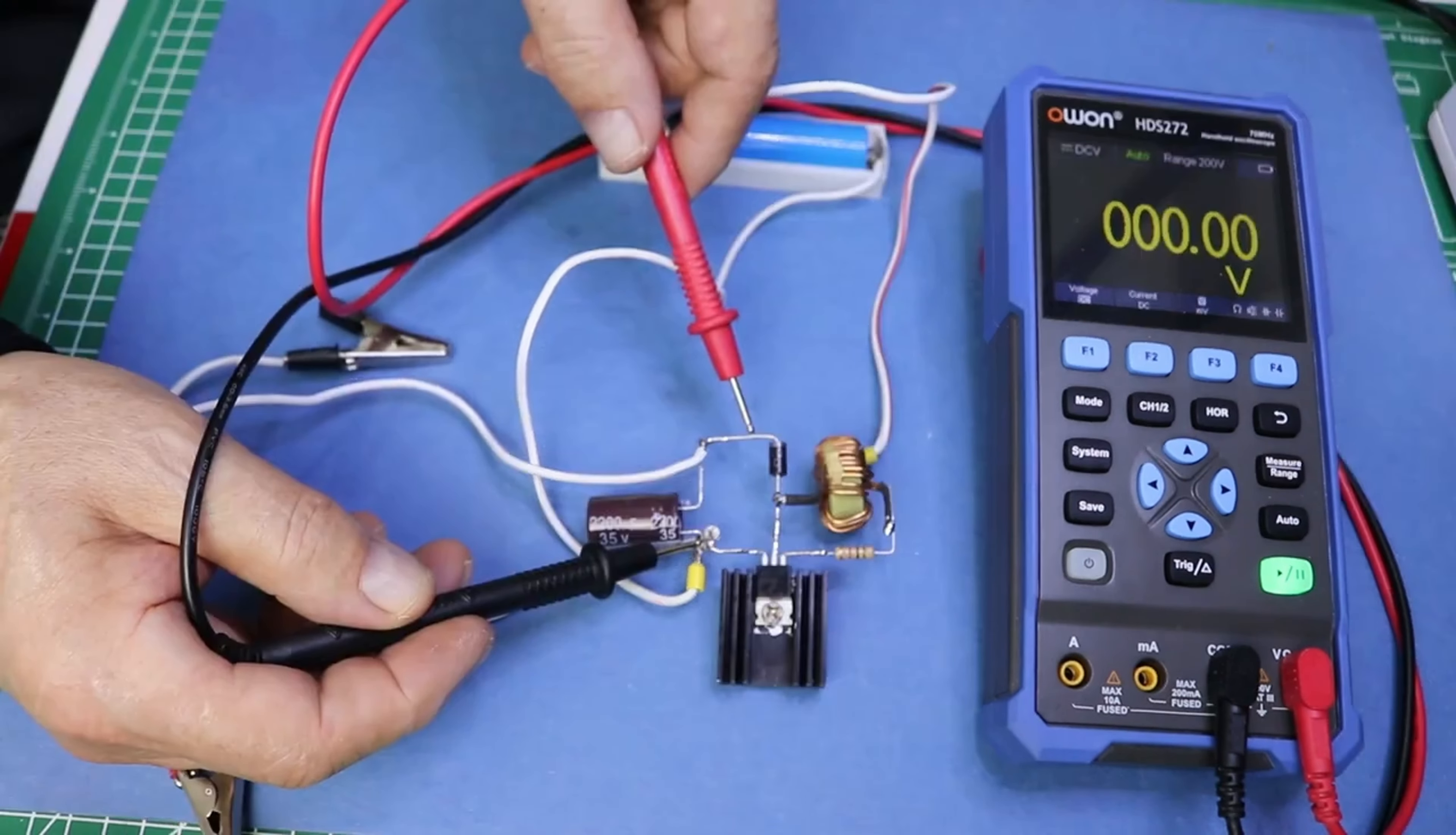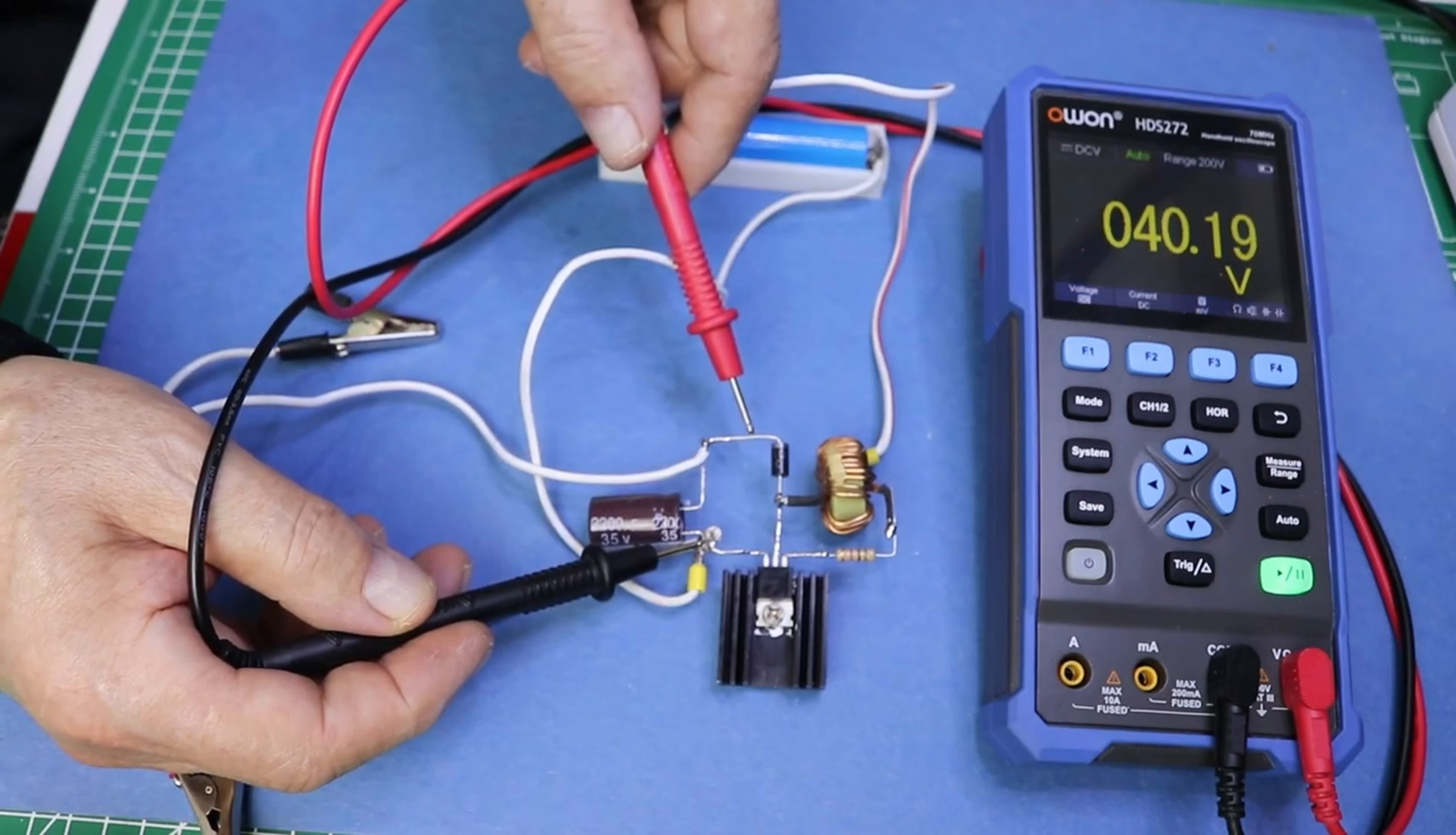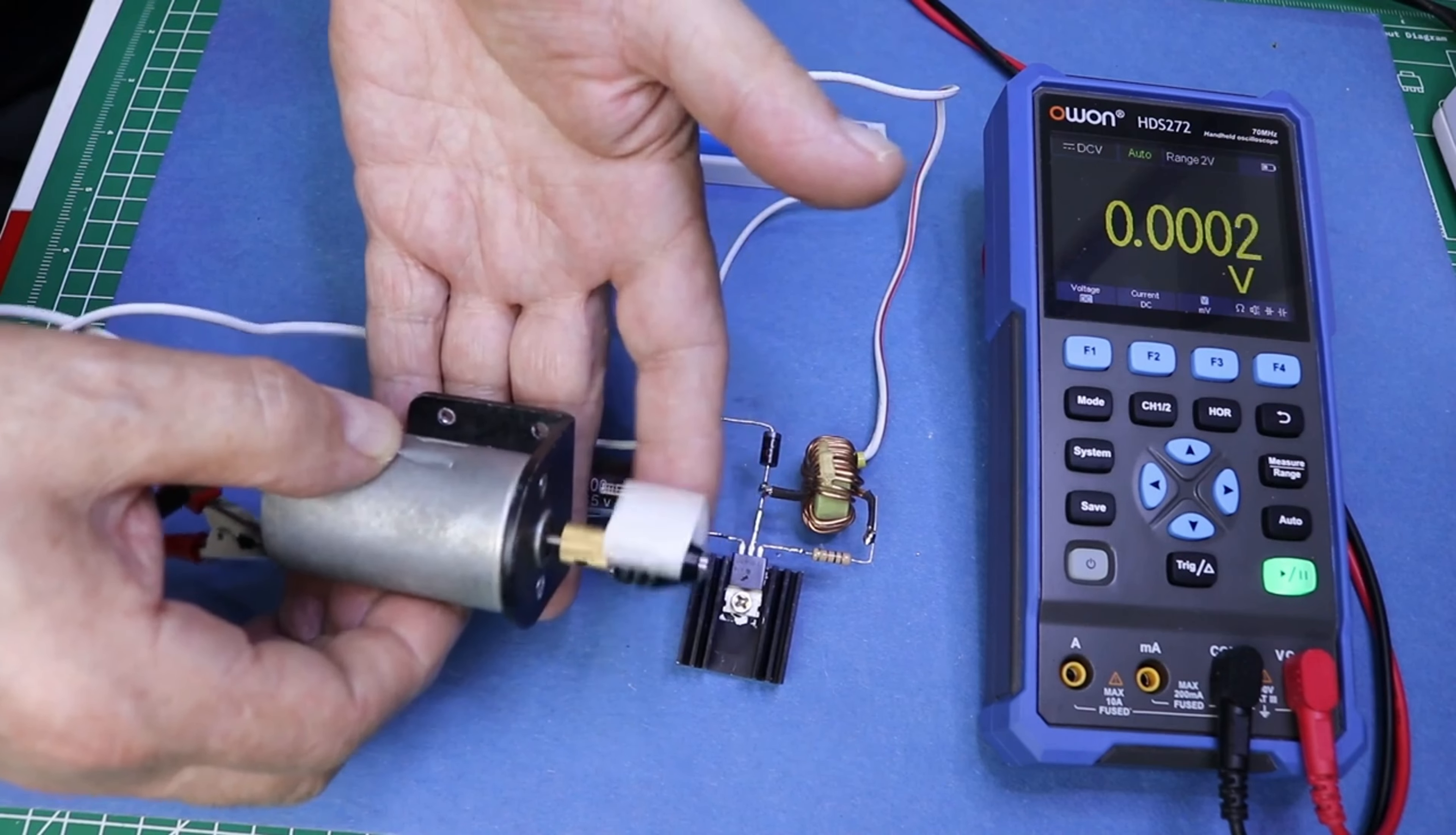Connect the TIP42 transistor to the circuit. This will control the transistor boost process. Add a 2200 UF capacitor to the circuit to regulate the input and output voltage and reduce ripples.